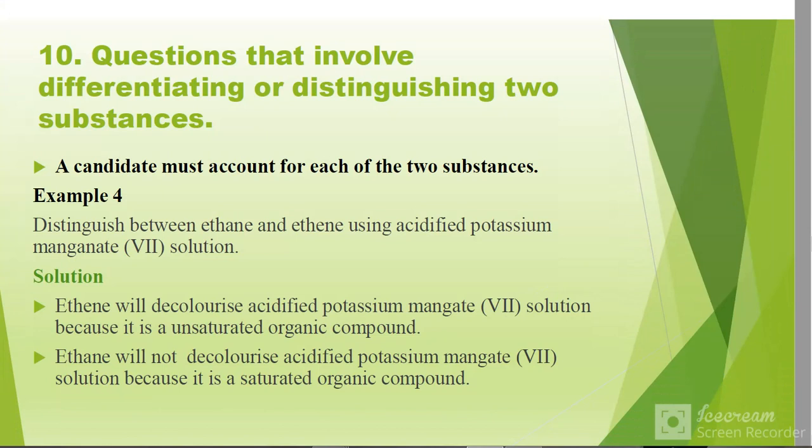A question that involves differentiating or distinguishing two substances: you should distinguish by using 'while,' if you don't use a table. For example, you can look at this example. Distinguish between ethene and ethane. Ethene will decolorize acidified potassium manganate(VII) solution because it is an unsaturated organic compound, while ethane will not decolorize acidified potassium manganate(VII) solution because it is a saturated organic compound.